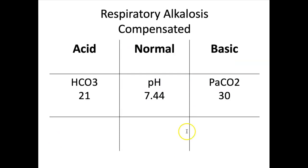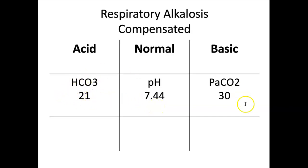Looking at another example: pH is 7.44 — that's normal. Bicarb was 21, which is on the lower side, so it goes on the acidic side. PaCO2 was also low; remember ROAM — respiratory is opposite — so it goes on the basic side. This gives us respiratory alkalosis. The pH is 7.44, which is more toward the alkalotic side of the range, and the PaCO2 matches on the alkalotic side. The pH is back to normal, so this is compensated — the bicarb on the acidic side is buffering the alkalosis. This is respiratory alkalosis, compensated.